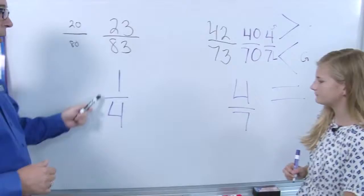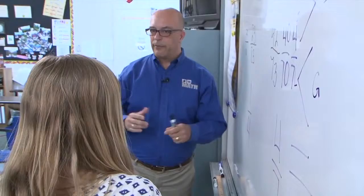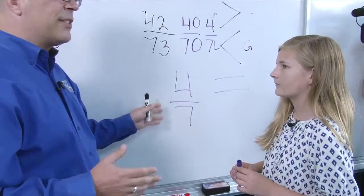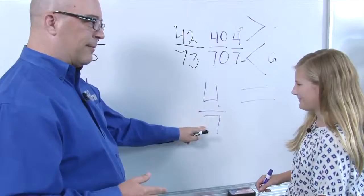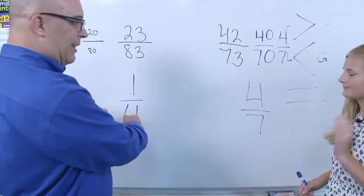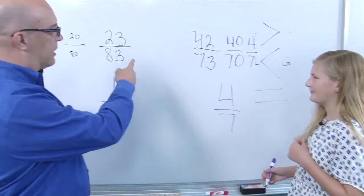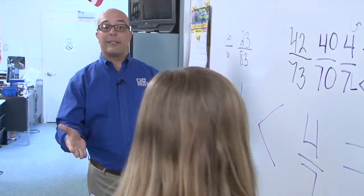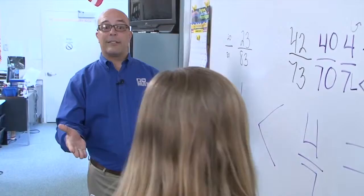Now, if we have 1 fourth, is that more or less than half? It's less than half. If we have 4 out of 7 — well, half of 7 is 3 and a half, so 4 is more than half. So this fraction is less than half and that one is more than half. What symbol do we put in there? Let's go back to the original problem. 23 over 83 is less than 42 over 73. And you did that using estimation, so we didn't have to multiply and get those big numbers.